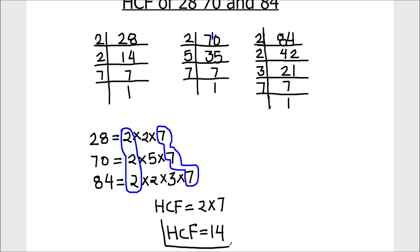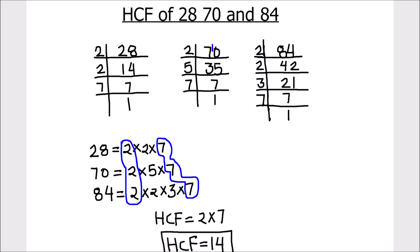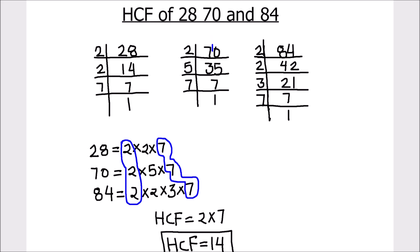So the HCF of the three numbers 28, 70 and 84 is 14. This is how we can find the HCF of any numbers easily by using the prime factorization method. I hope this video is helpful to you. If you like the video please hit the like button and subscribe to my channel for more math videos. Thanks for watching.